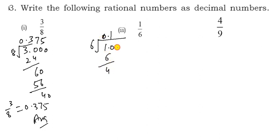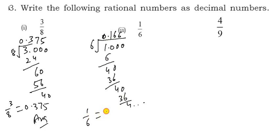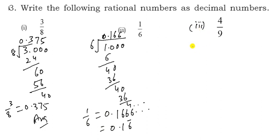For 1 divided by 6: we get 0 point. Six 1s are 6, remainder 4. Bring down 0. Six 6s are 36, remainder 4 again. This repeats. So 1 by 6 = 0.1666... which is written as 0.16 bar.